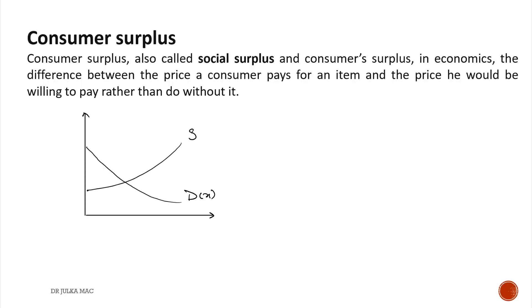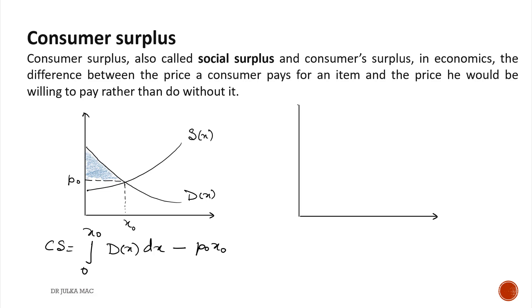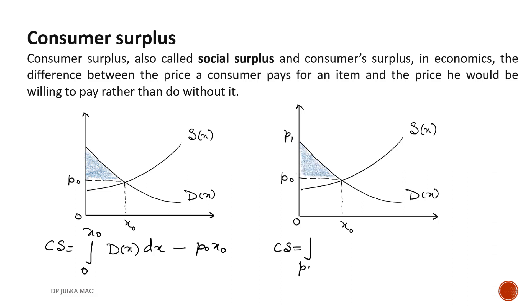Consumer surplus is also called social surplus. Under pure competition, the equilibrium demand x0 is obtained by equating the demand and supply function. We can calculate consumer surplus using the formula: integration from 0 to x0 of the demand function f(x) dx minus p0·x0. Alternatively, consumer surplus can be calculated with respect to p using the formula: integration from p0 to p1 of the demand function as a function of p, dp.